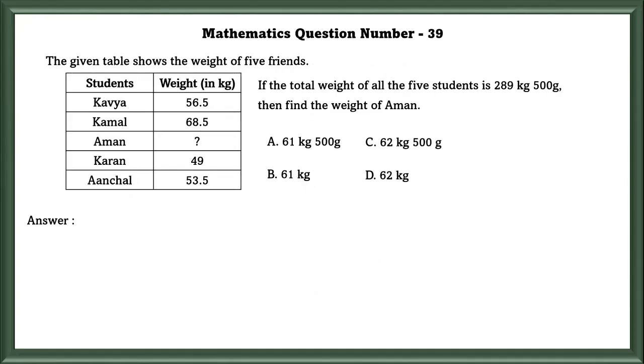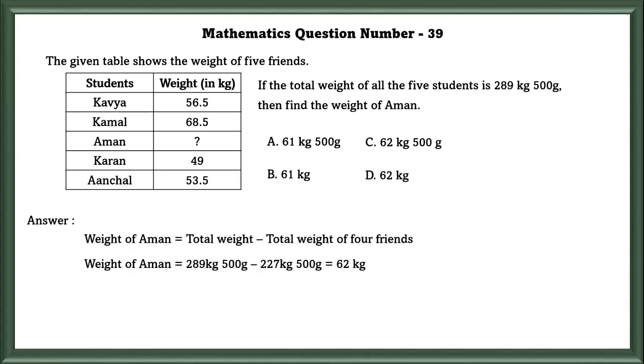Mathematics question number 39. The given table shows the weight of 5 friends. If the total weight of all the 5 students is 289 kg 500 grams, then find the weight of Amman. In order to find the weight of Amman, we have to add Kavya, Kamal, Karan, and Anshal and then subtract it from the total weight, which equals 62 kg. So Amman is 62 kg.